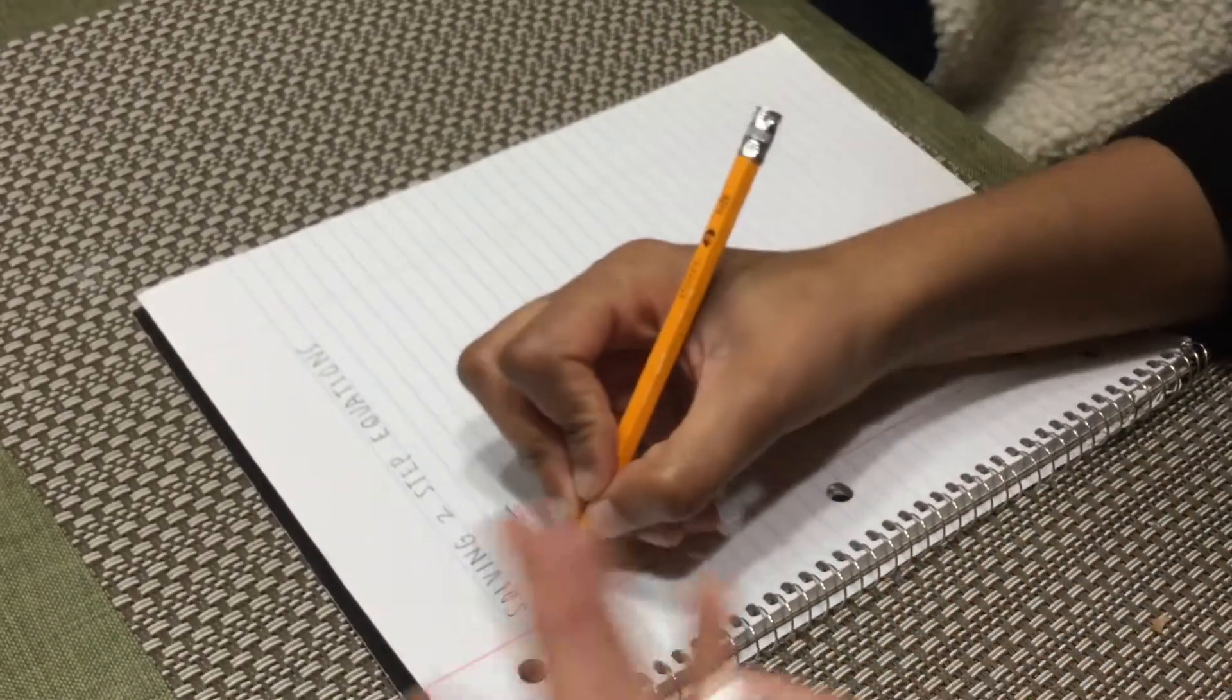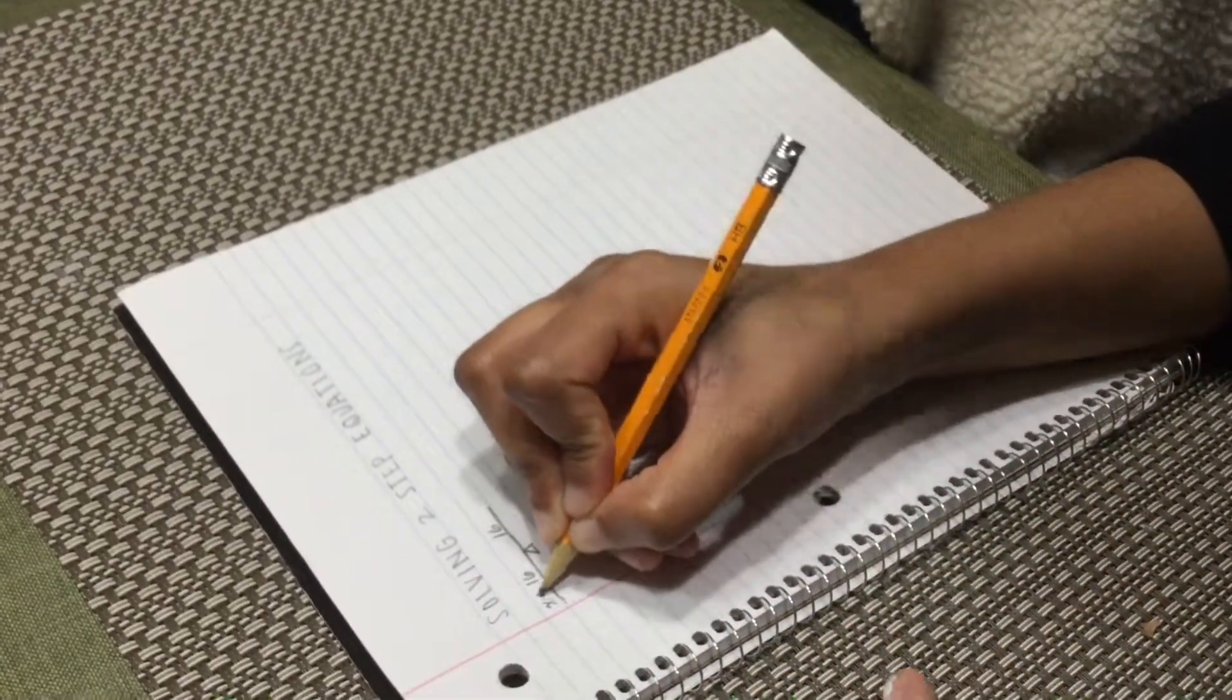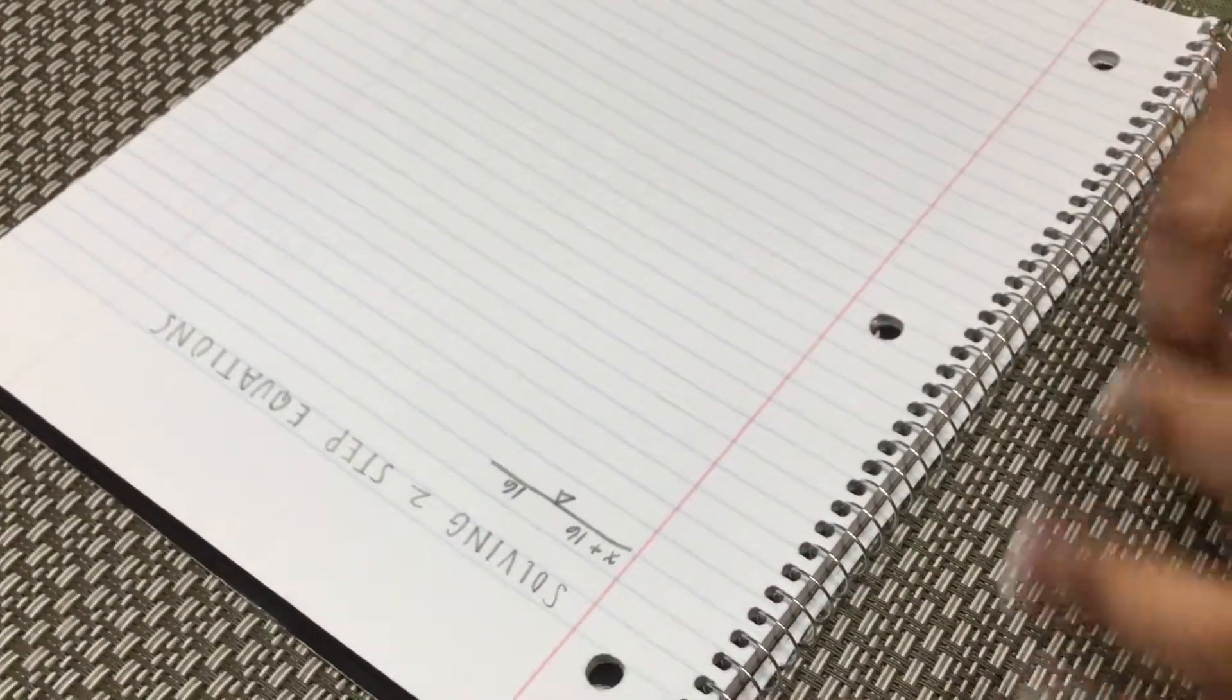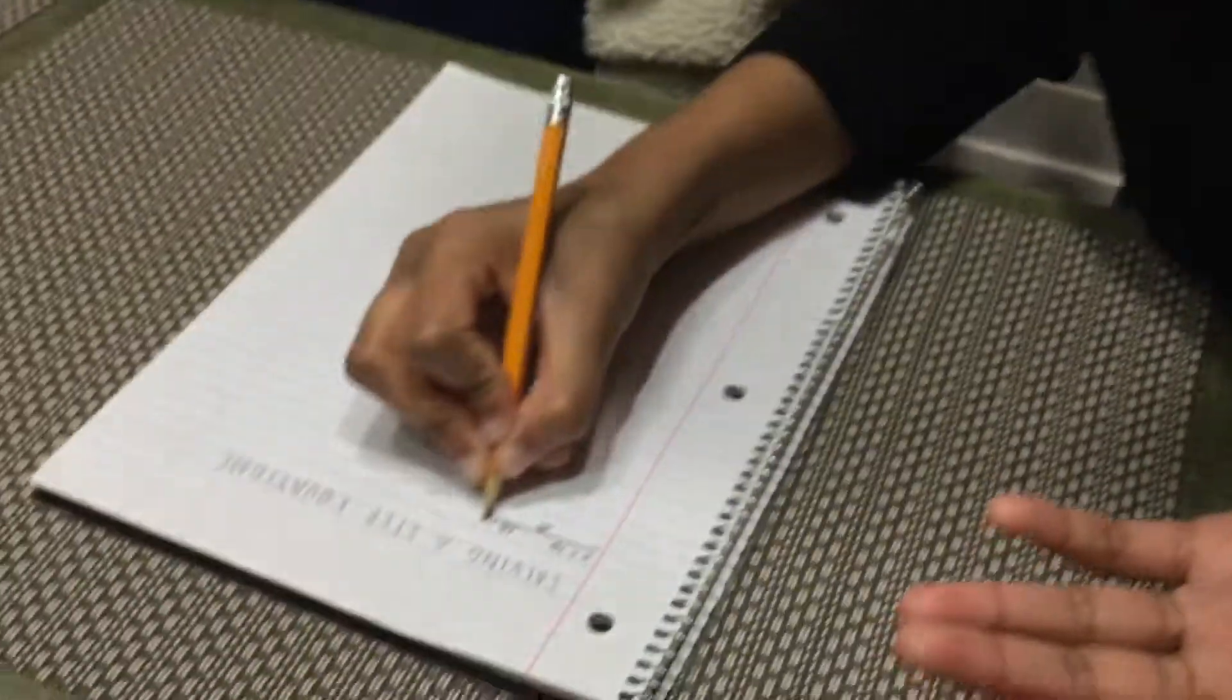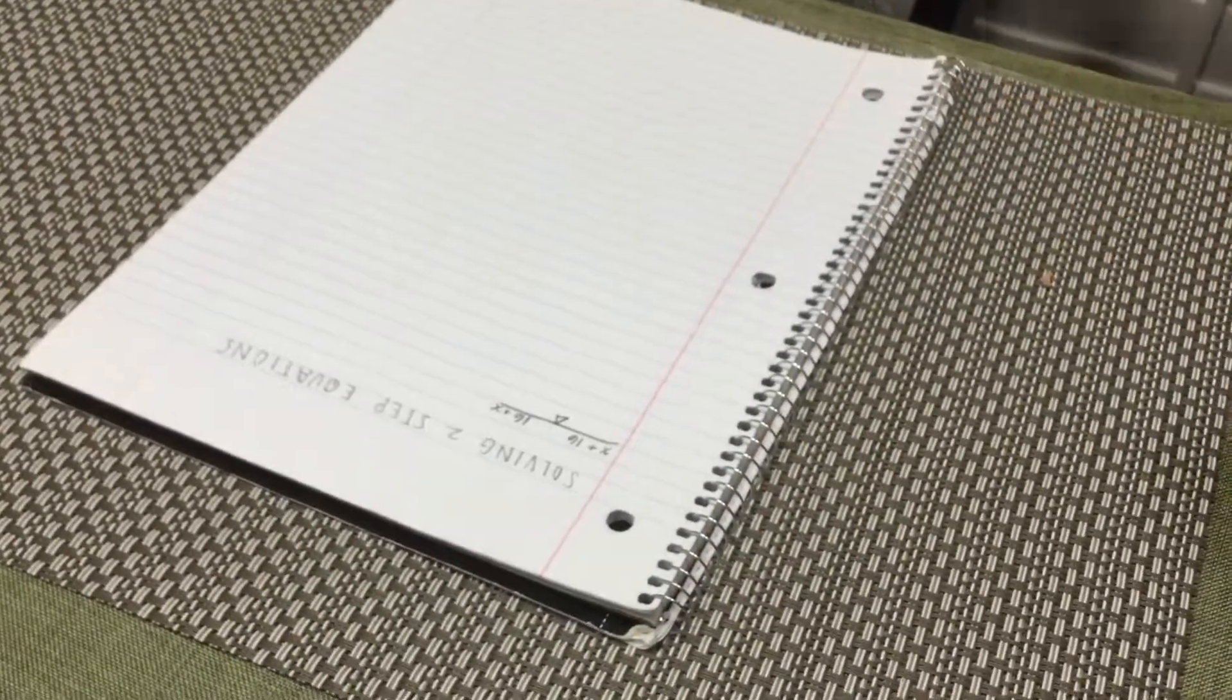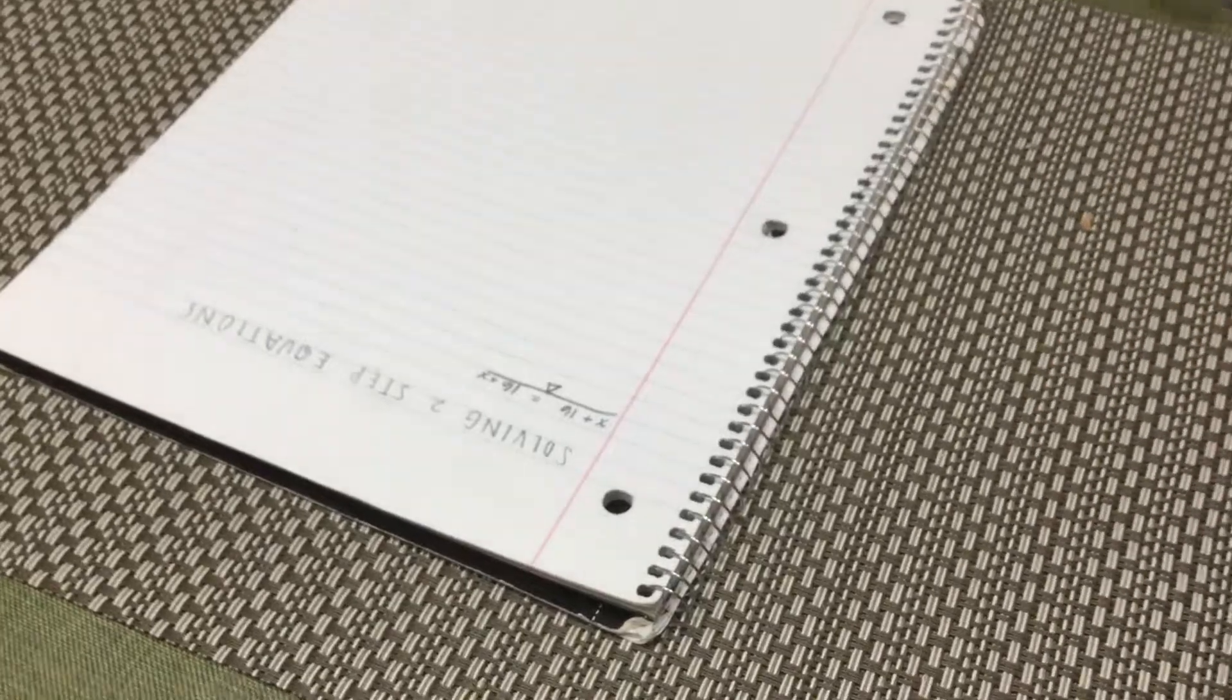So say that I added an unknown value of x to one side of the equation. x is a variable. It could be any number. So I added x to one side of the equation. So what do I have to do to keep the balance of that seesaw, or that balance? Add x? Exactly. I have to add x to the other side. We have to keep it balanced and equal. That's how equations work.